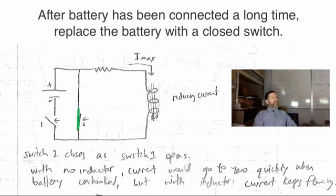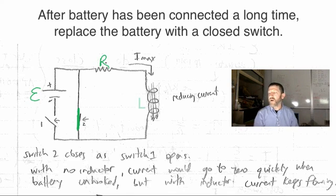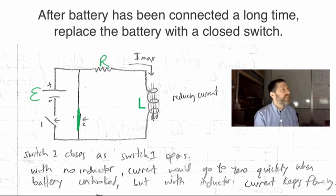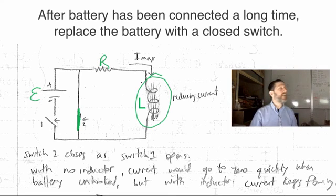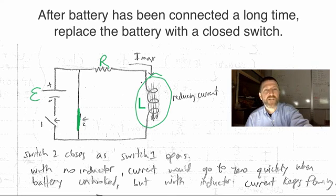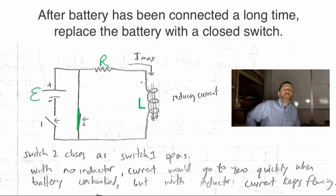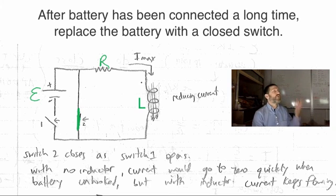At that first instant, if E over R — if the EMF over this R is our current — when we open this switch and close that one, guess what the current will be at that first instant. Even though the battery is disconnected, it will remain at E over R for that one instant. That inductor is just like a mass: once that current is flowing, it does not want to let the current stop. Without an inductor, the current would go down to zero right away.